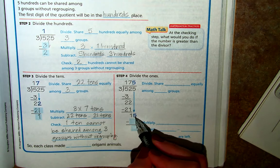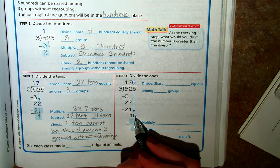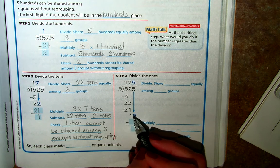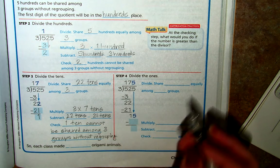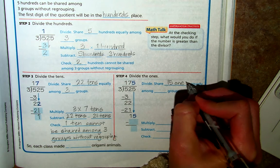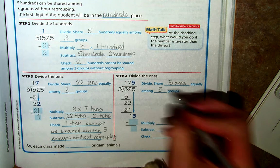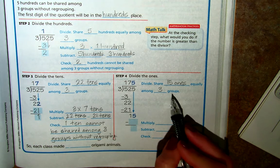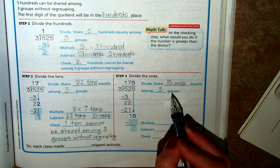And what happens here is we have this one left over, and we bring down our ones digit, which then gives us a new number to work with, which is 15, and it gives us 15 ones. And so how do we share 15 ones equally? We share 15 ones among 3 groups, because that's our divisor.